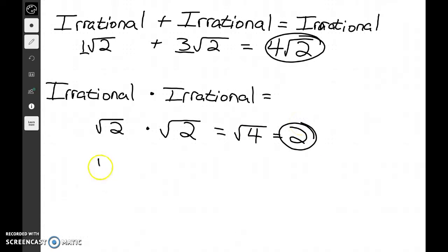I could also have something like the square root of 3 times the square root of 2. 3 times 2 would be 6. Can we take the square root of 6? No. So that would be an irrational number.